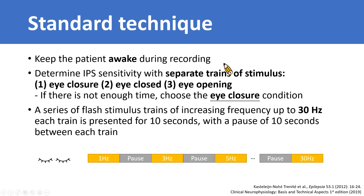To determine IPS sensitivity, separate trials of stimulus are performed, including eye closure, eye closed, and eye opening. If there is not enough time, we should choose the eye closure condition, because it has the highest chance of inducing a photophotoparoxysmal response. When performing IPS, a series of flash stimulus trials of increasing frequency up to 30 Hz — each trial presented for 10 seconds — with a pause of 10 seconds between each trial, as shown in the picture.